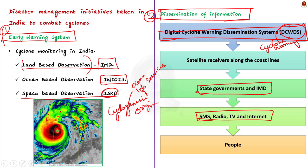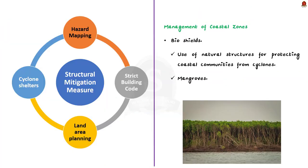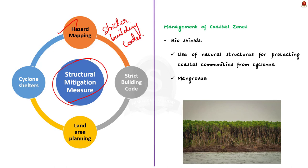The third important measure is the structural mitigation measure. This starts with hazard mapping. Once the hazard mapping is done, areas that are more prone to cyclones are provided with stricter building codes to withstand the effects of cyclones. Hazard mapping also helps with proper land use planning, and in more cyclone-prone areas, proper cyclone shelters are created.